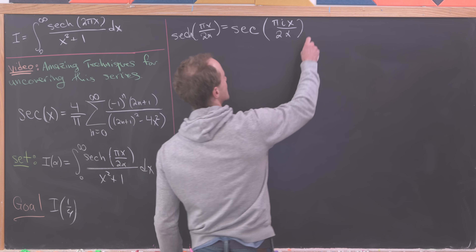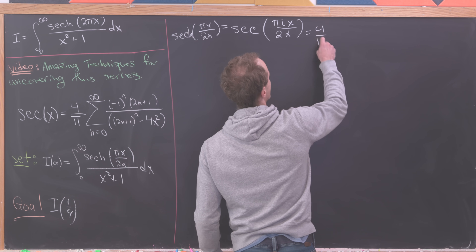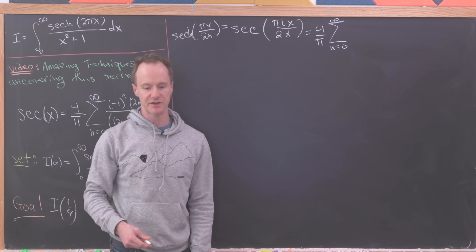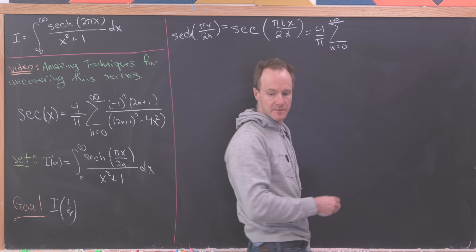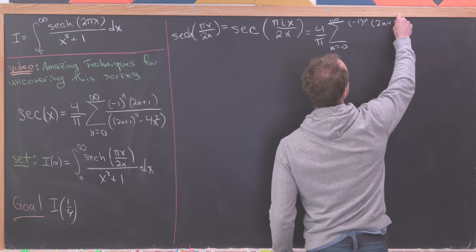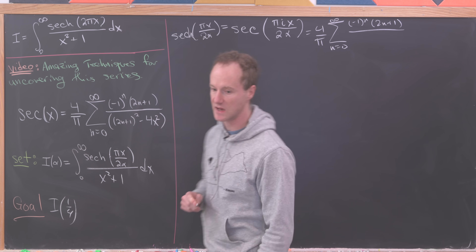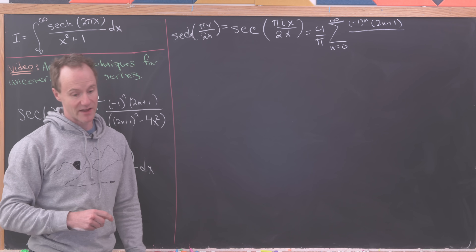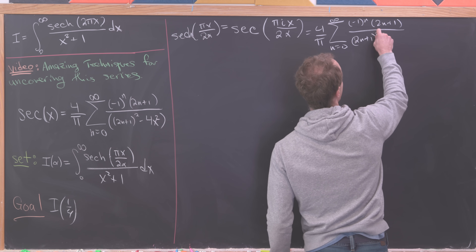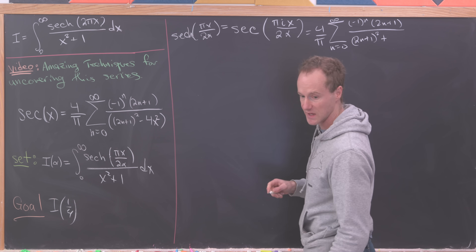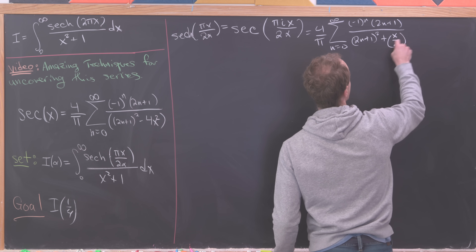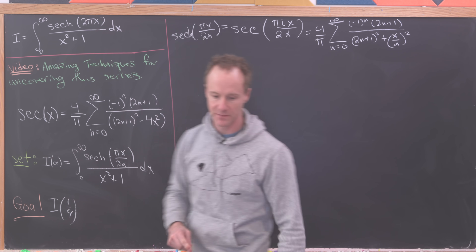So we get 4/π times the sum from n=0 to infinity of (-1)^n times (2n+1) in the numerator, and in the denominator (2n+1)² plus (x/α)². The sign flip from squaring i changes the minus to a plus in the denominator.